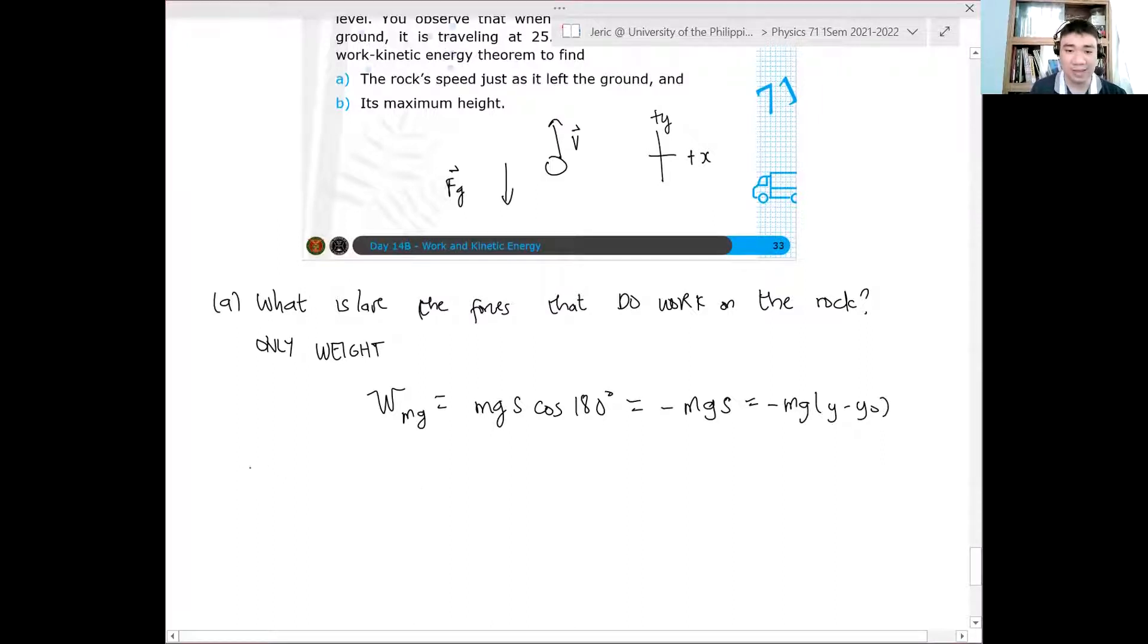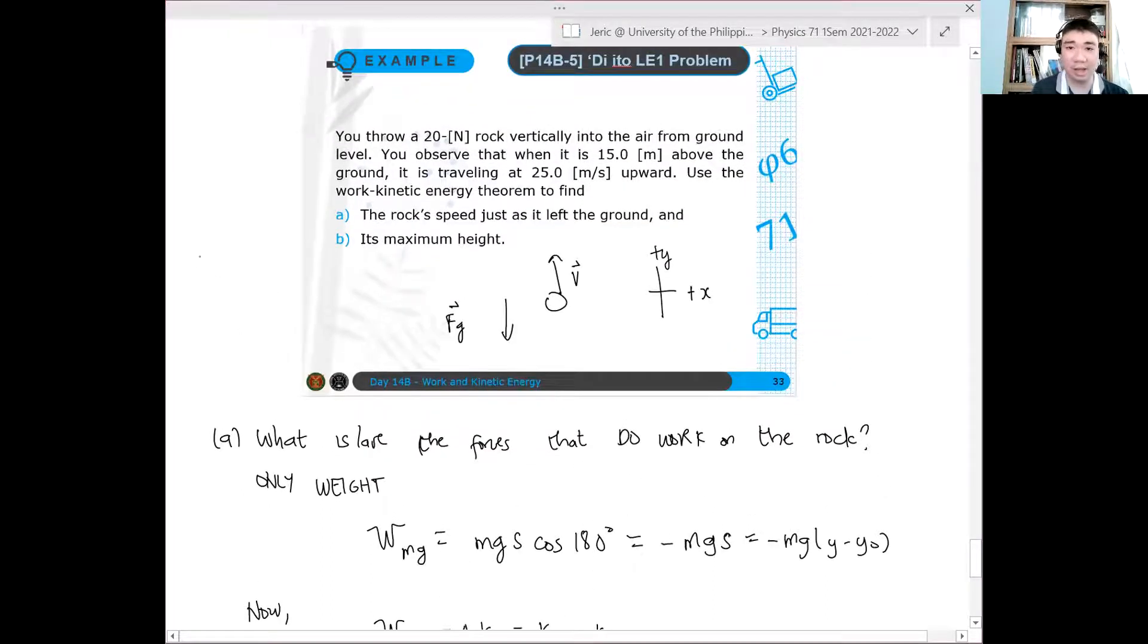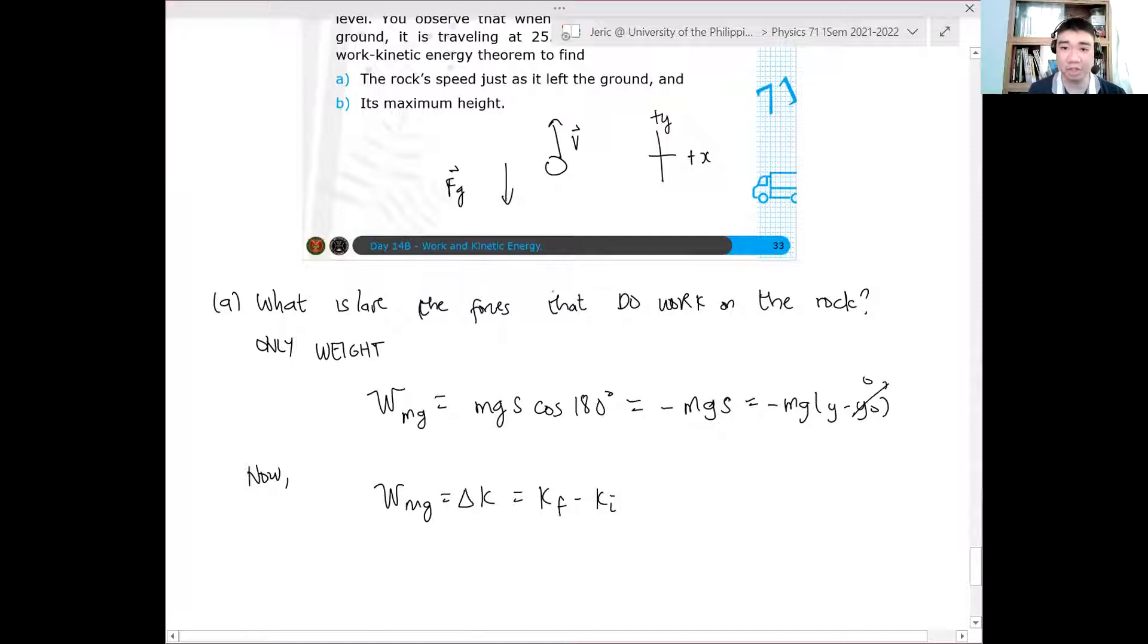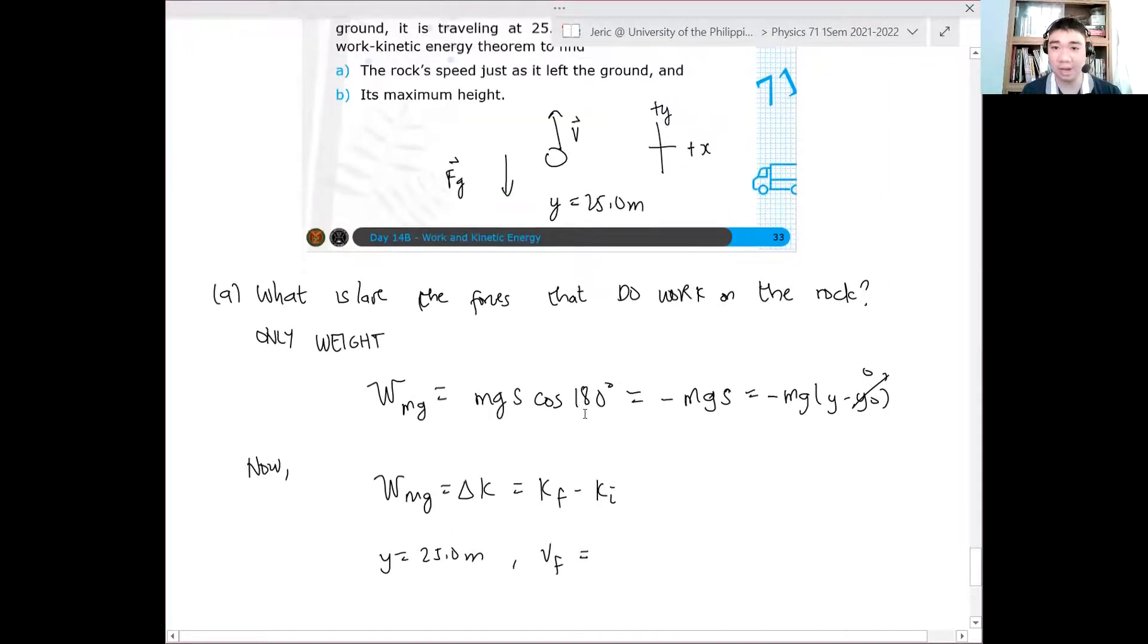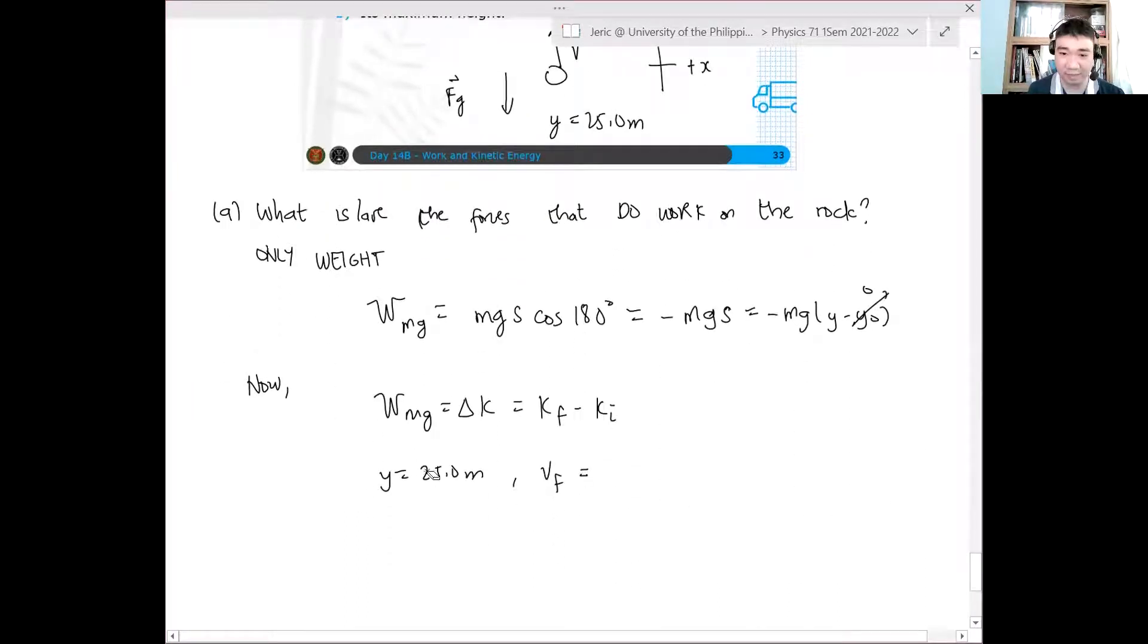So now, we know that work of the weight is just equal to change in kinetic energy, which is just equal to final kinetic energy minus initial kinetic energy. And we know also that if we will set that as it left the ground is the one that's zero. So y naught equal zero here. This is just zero. The final position, y, is just equal to 25 meters. So y equals 25 meters. Sorry, y equals 15 meters. The velocity is at 25.0 meters per second.